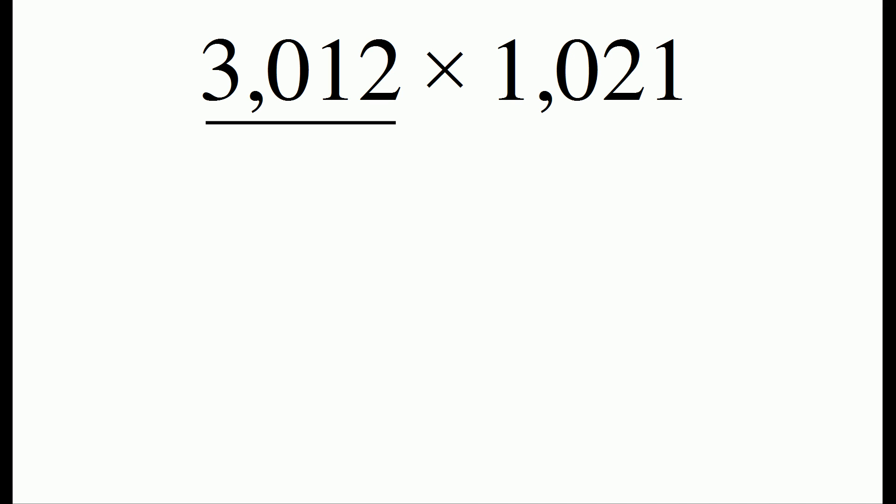The first step is to reverse the digits of one of the numbers. So we're going to take the number 3012 and reverse the digits. So we write down a 2, then a 1, a 0, and finally a 3.